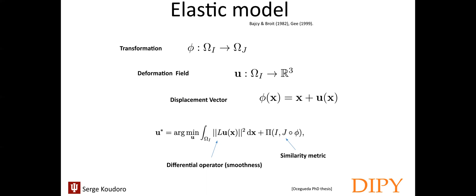What does inverse consistent mean? It means that if the same function is used to obtain the optimal transform mapping J to I, or I to J, the solutions are not inverses of each other.